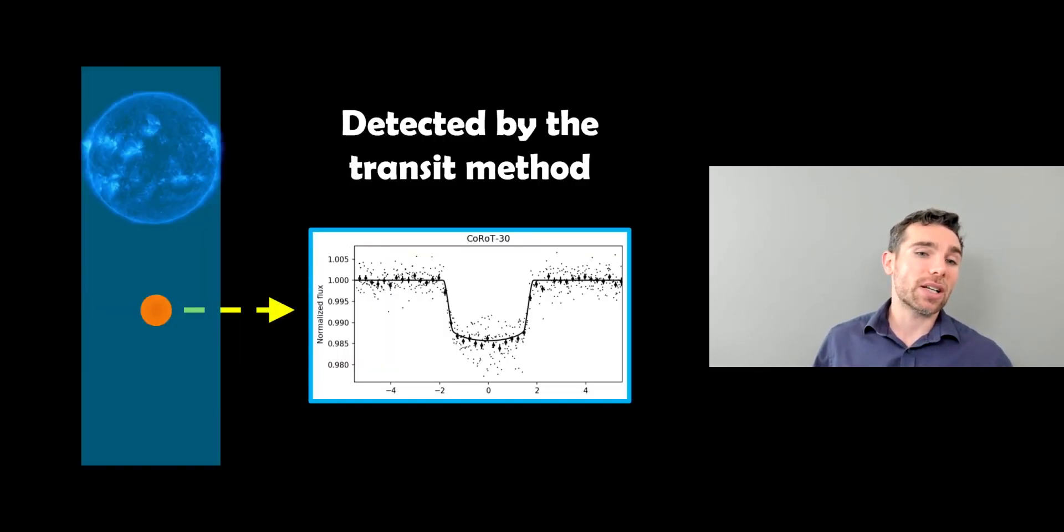And how was it detected? Well, it was detected with the transit method. So this is where a planet will pass in front of a star. It blocks out some of the light, and then we can detect it. And it's a fairly straightforward method. This is just an example. This is not the light curve from this particular planet. But you can see, as that planet passes in front, it blocks out some light. And the amount of light it blocks out relates to its size and other things like that.